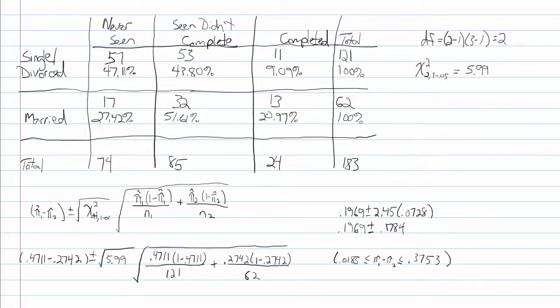The confidence interval does not contain zero. Therefore, the difference of these two proportions is statistically significant. We can be 95% confident that between 2% and 38% of single-divorce veterans have never sought treatment for PTSD as compared to married veterans.